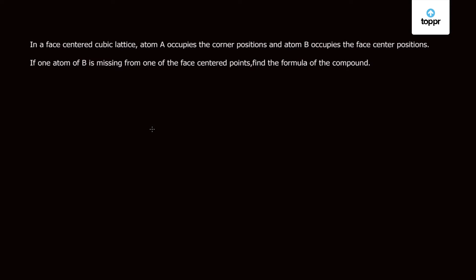Today we are going to discuss a question which was asked in AIEEE 2011. This question is from a chapter known as solid state. In a face centered cubic lattice, atom A occupies the corner positions and atom B occupies the face center positions. If one atom of B is missing from one of the face center points, find the formula of the compound.